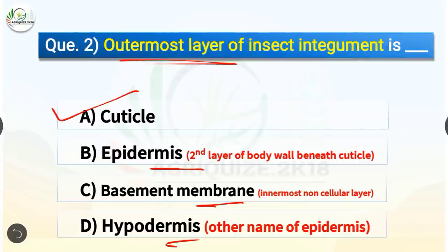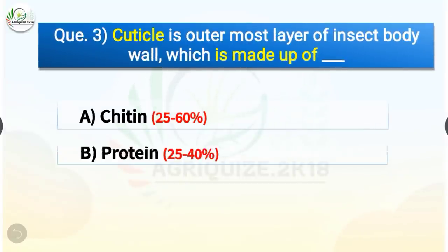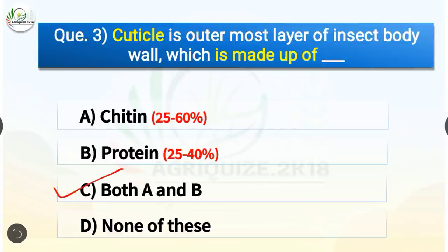Question number 3. Cuticle is the outermost layer of insect body wall, which is made up of what? The options are chitin, protein, both A and B, or none of these. The correct answer is option C, both A and B. Cuticle is made up of chitin and protein.